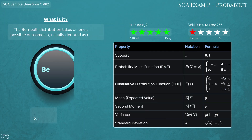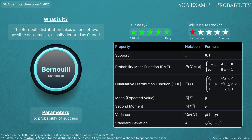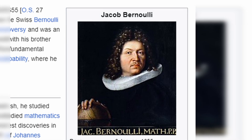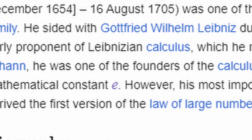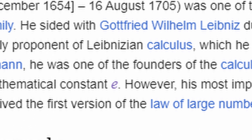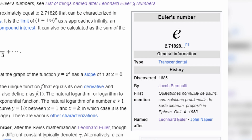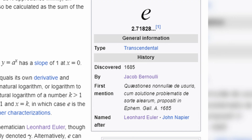The next distribution is the Bernoulli distribution, which is named after Jacob Bernoulli. He apparently also discovered the constant e, which is also known as Euler's number, but it was discovered by Jacob Bernoulli.